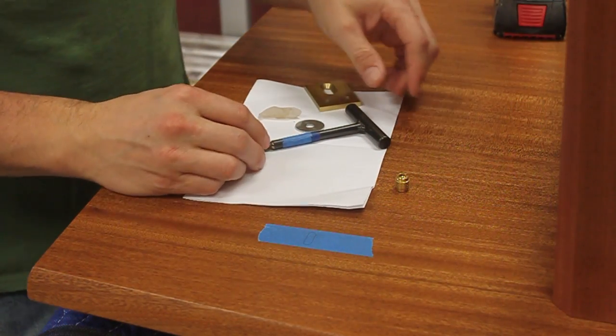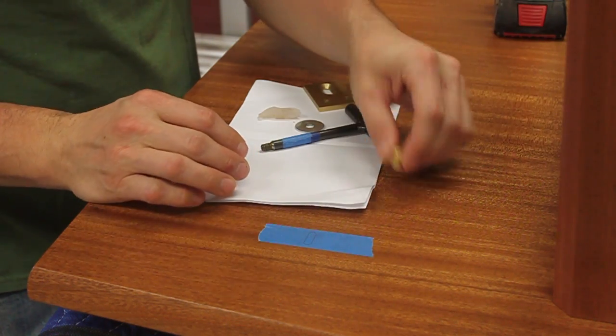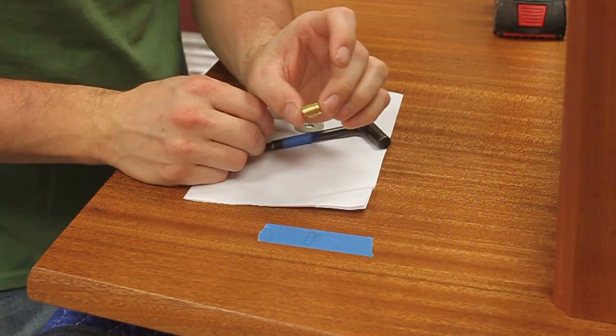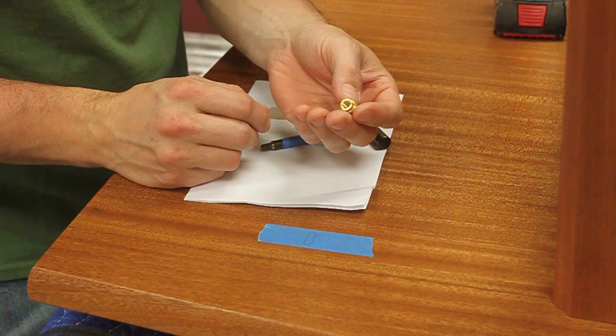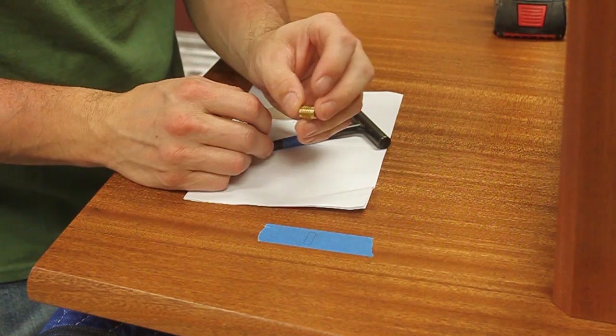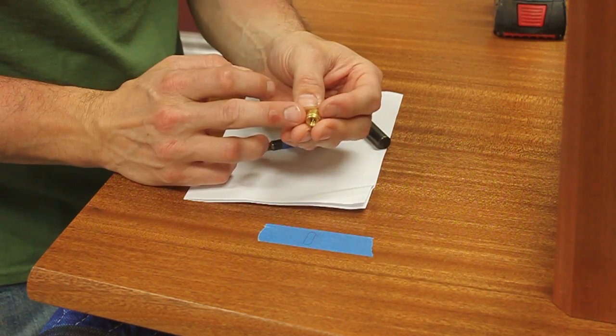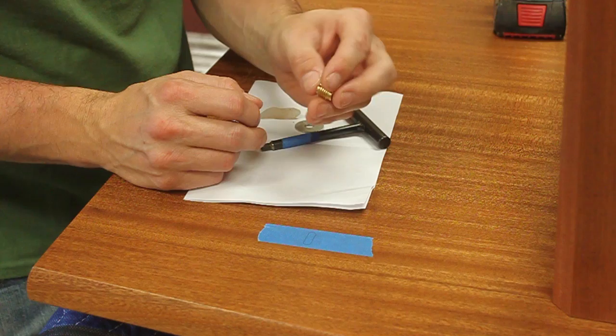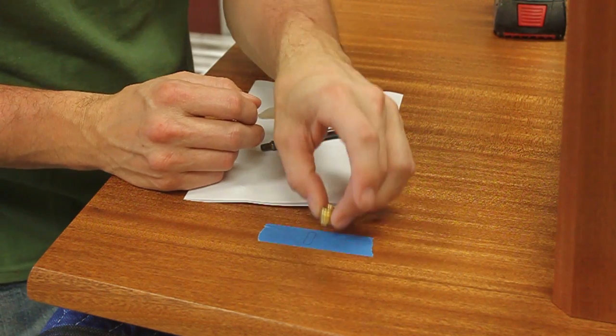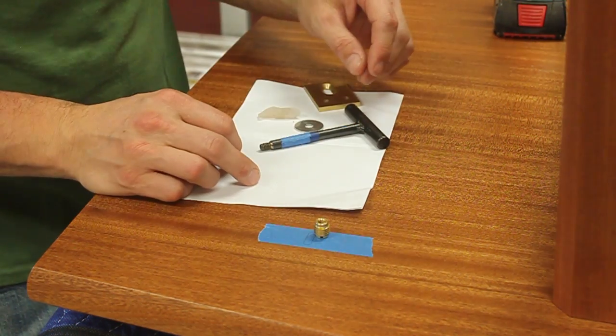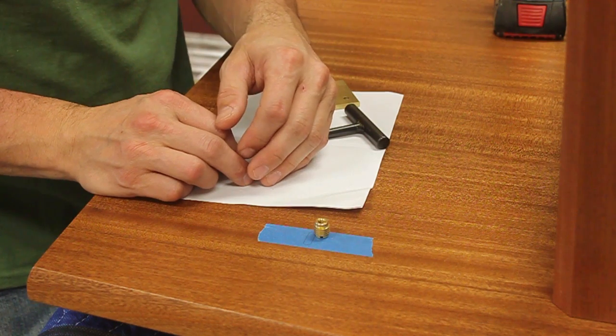So the way I like to attach my table base to my top is by using this guy. So this is a table top insert. You can use it in multiple different ways. I use it also as a drawer stop. But in this case, this guy is just going to get buried into the top and then it will accept a 1.25 inch bolt.